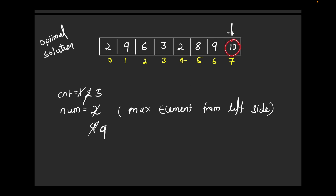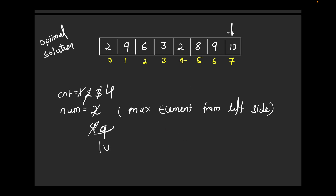Coming to the second 9: is 9 greater than or equal to 9? Yes. Increment counter and reinitialize num to 9. Now go to 10: is 10 greater than 9? Yes. The 9 is the maximum of all elements to the left of 10, and 10 is greater than 9, so 10 is also counted. Finally num is reinitialized with 10. After traversing the whole array, the answer is 4: the first 2, then 9, then 9, then 10.